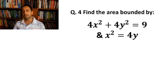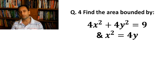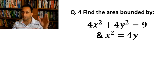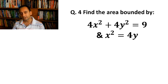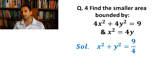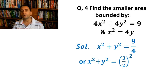Question number 4: Find the area of region bounded by 4x² + 4y² = 9 and x² = 4y. The first equation — the coefficients of x² and y² are exactly equal, so it forms a circle. Converting to standard form gives x² + y² = 9/4, which is (3/2)². So the radius of our circle is 3/2.